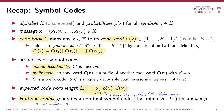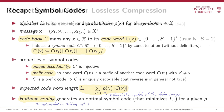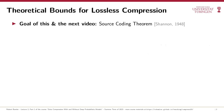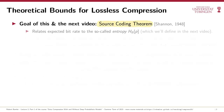In this video, we'll build on the formalism of symbol codes, but we will generalize to arbitrary uniquely decodable lossless compression codes in the next video. We'll prove the important source coding theorem. When phrased for symbol codes, the source coding theorem relates the expected codeword length to an information-theoretical quantity called the entropy of the symbol probabilities p.